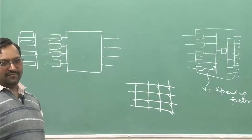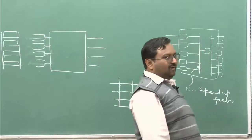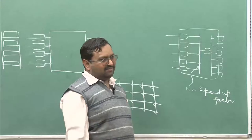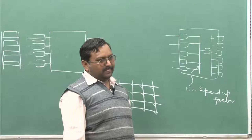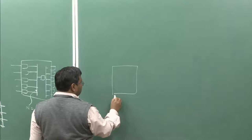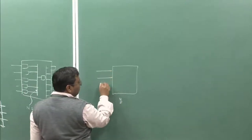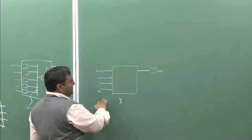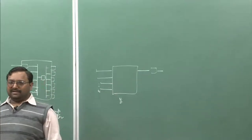Now we have to go to the analysis part. The important questions are: what will be the utilization and what will be the average queue length for the input queued system and the output queued system? Let us look first at the output queued system. A speed-up factor of n is assumed. Even if all packets want to go to the same port, it is possible to read all packets at n times faster speed and write into the outgoing buffer.